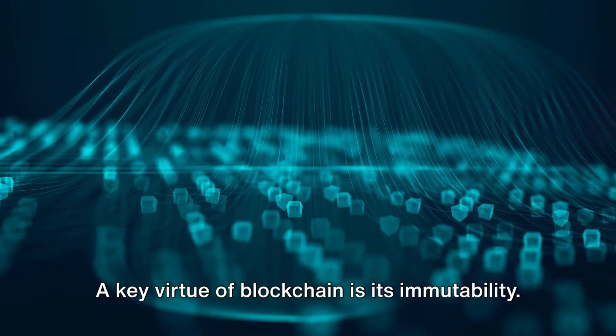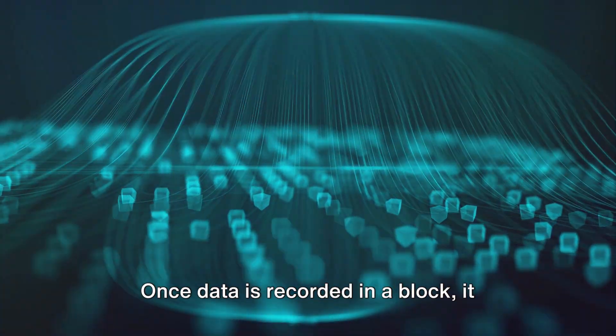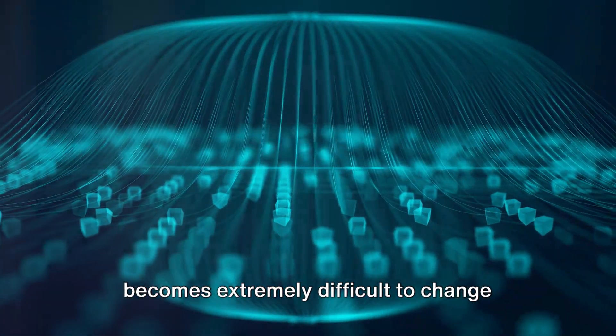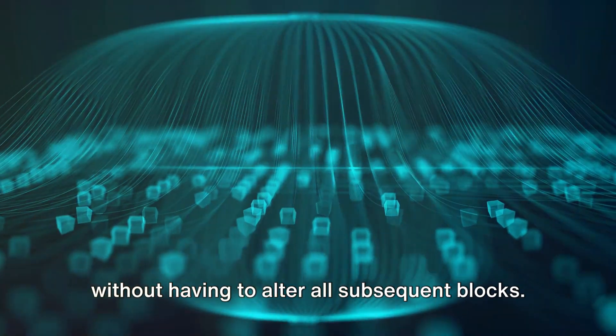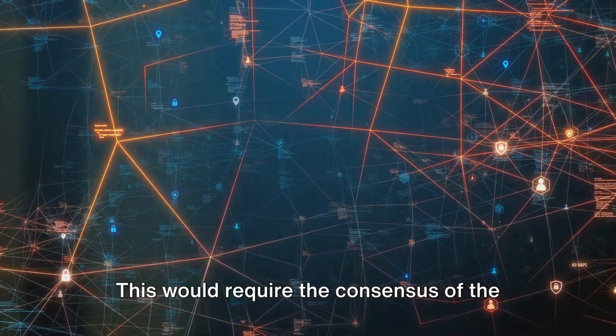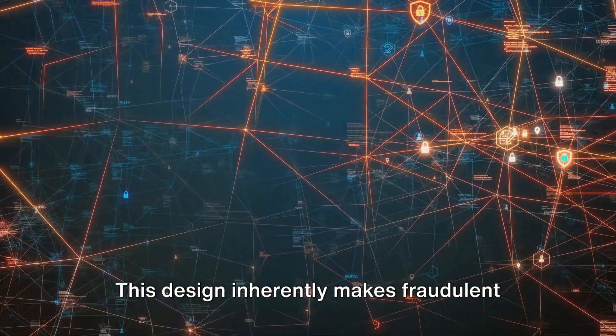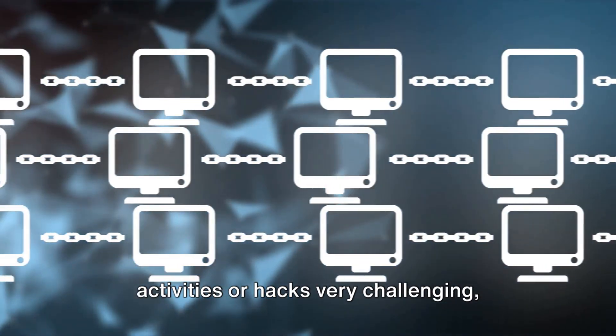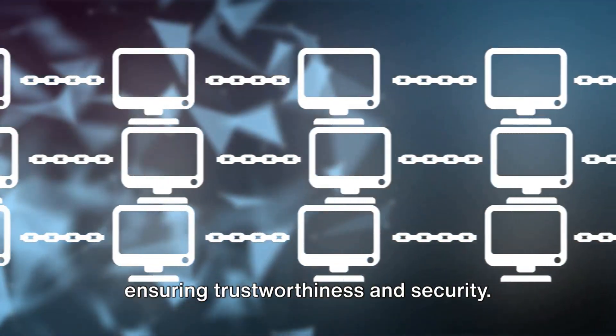A key virtue of blockchain is its immutability. Once data is recorded in a block, it becomes extremely difficult to change without having to alter all subsequent blocks. This would require the consensus of the majority of the network. This design inherently makes fraudulent activities or hacks very challenging, ensuring trustworthiness and security.